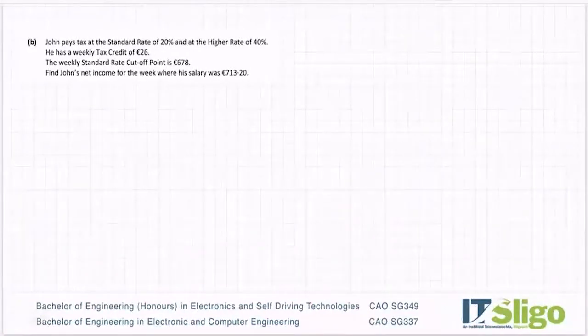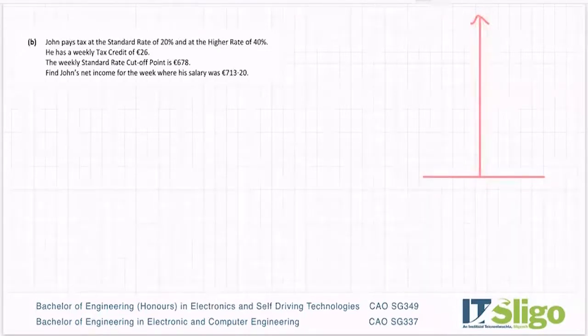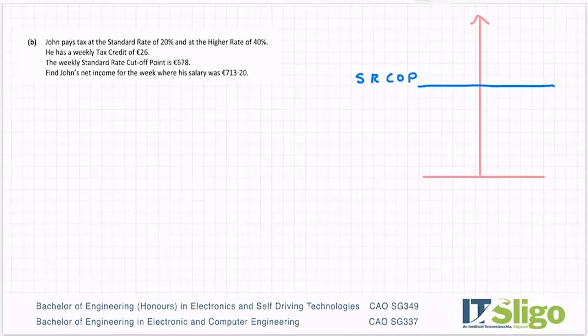Part B. John pays tax at the standard rate of 20% and at the higher rate of 40%. He has a weekly tax credit of €26. The weekly standard rate cutoff point is €678. Find John's net income for the week where his salary was €713.20. Okay, so just a quick preamble about tax in this country. Tax in this country - the more you earn the more tax you pay, or that's how this country is designed. There's this infinite scale of tax you could pay corresponding to how much wages you could earn. But the government do have this what's called standard rate cutoff point, often called SRCOP.